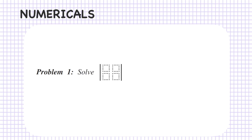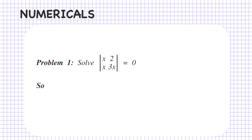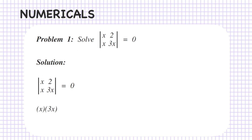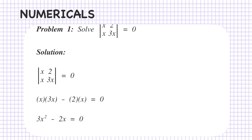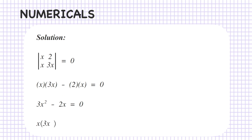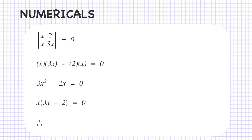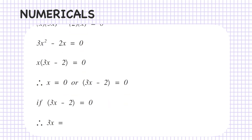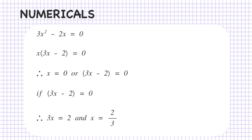Let's try a numerical problem. Problem 1: solve the determinant of x, 2, x, 3x equals 0. So we have x times 3x minus 2 times x equals 0, giving 3x² minus 2x equals 0. Taking x as common: x times (3x minus 2) equals 0. Therefore x equals 0 or 3x minus 2 equals 0, giving x equals 2/3. So there are two values of x: x equals 0 or x equals 2/3.